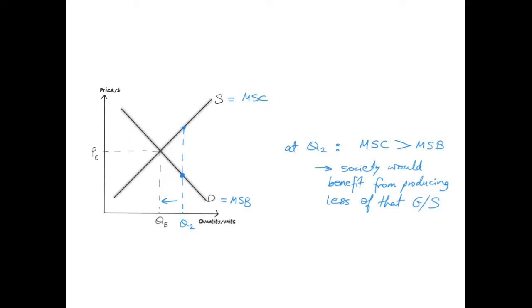The opposite is also true. If the market is producing Q2 instead of Qe, MSC is higher than MSB — the marginal social cost exceeds the marginal social benefit. In this case, society would actually benefit from producing less of that good or service. A good example is harmful products like cigarettes and alcohol, which are often over-provided, over-produced, and over-consumed.